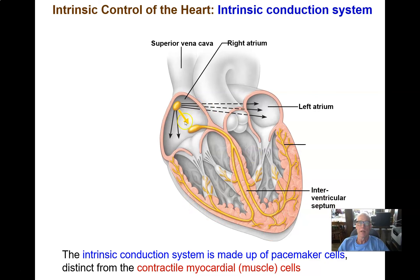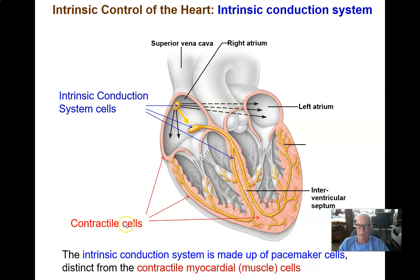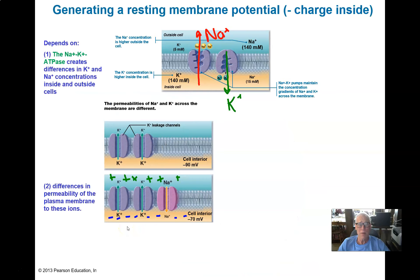The pacemaker cells are seen here in yellow. All of those yellow lines are like a wiring harness made up of intrinsic conduction system cells — they're all pacemaker cells, though they differ slightly in their properties. All the muscle cells are drawn in pink — the actual contractile cells that do the work of pumping blood are shown in pink, the myocardium. The pacemaker cells are quite different from what we've learned about in other excitable cells.